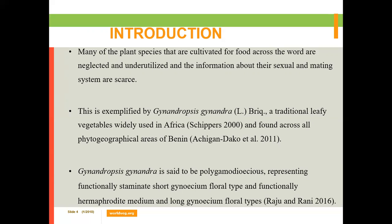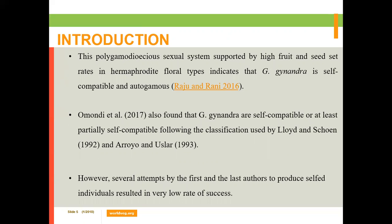Gynandropsis gynandra is said to be polygamodioecious, representing functionally staminate short gynecium floral type and functionally hermaphrodite medium and long gynecium floral type. This polygamodioecious sexual system, supported by high fruit and seed set rates in hermaphrodite floral types, indicated that Gynandropsis gynandra is self-compatible and autogamous. This was also confirmed by Omondi and Earl in 2017, that Gynandropsis gynandra is self-compatible or at least partially self-compatible.